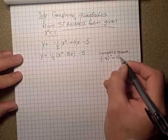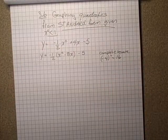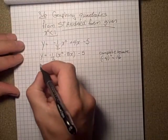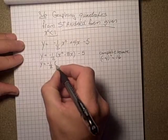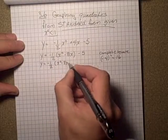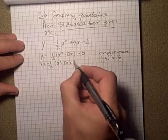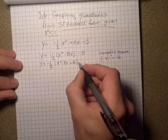So add that 16 in here, positive 16, because negative 4 squared is positive 16. Close the brackets, put the 5.